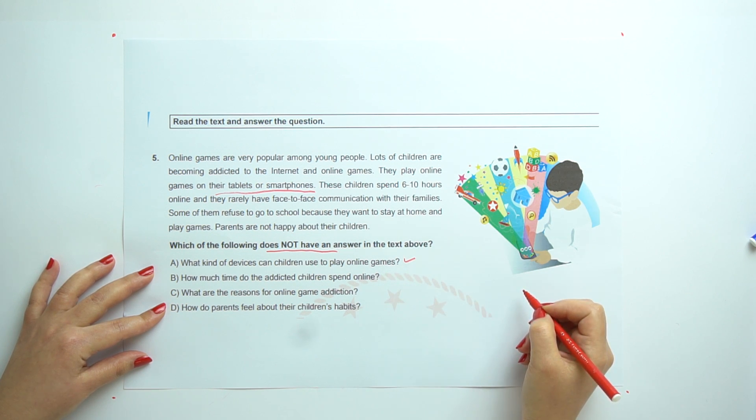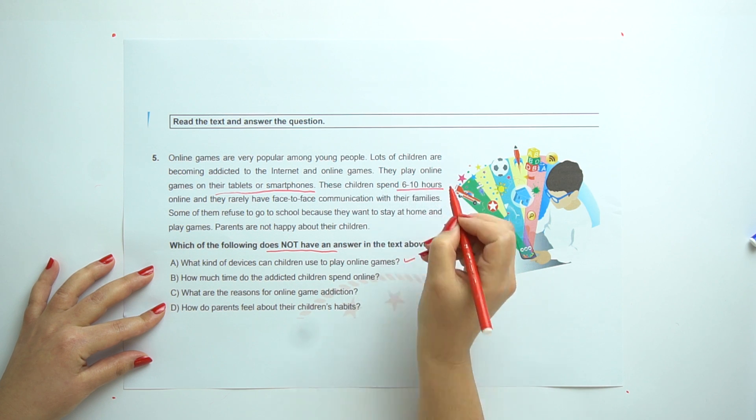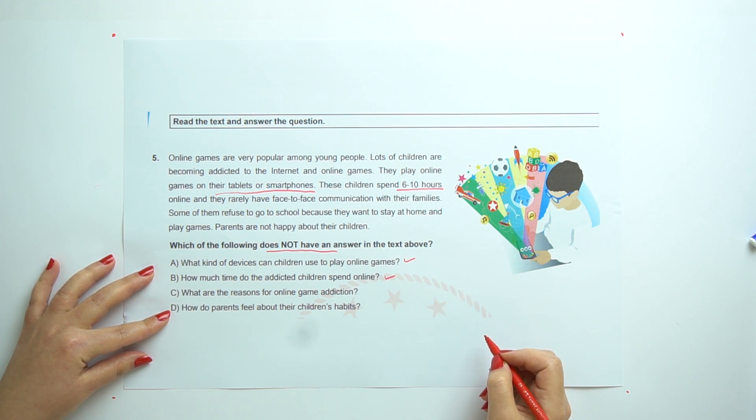How much time do the addicted children spend online? Yes, they have. 6 and 10 hours. We have the answer too.